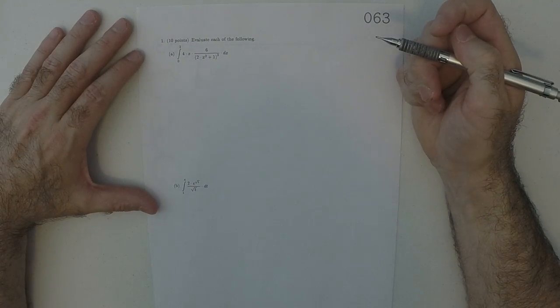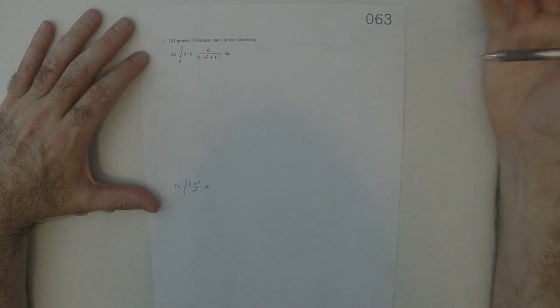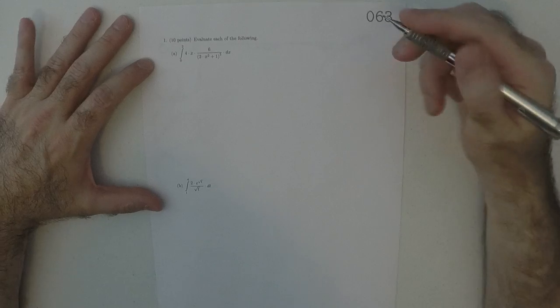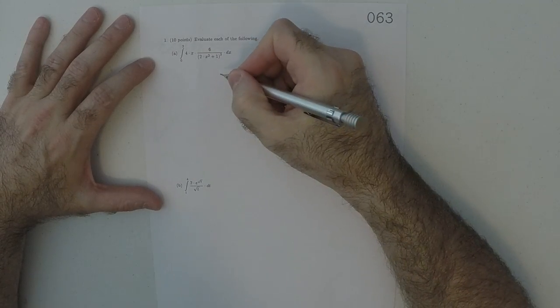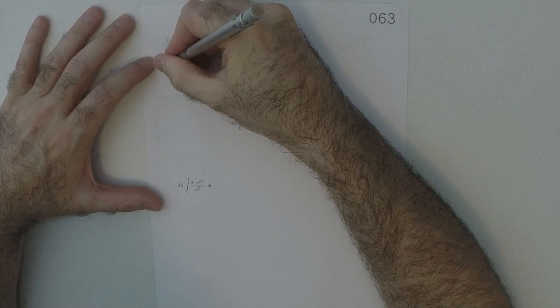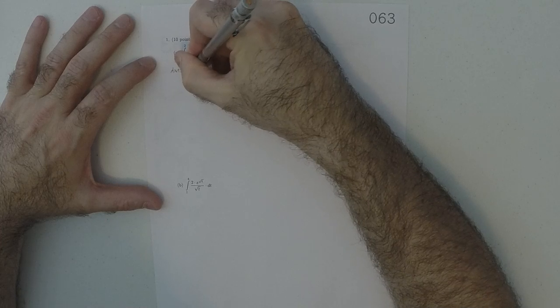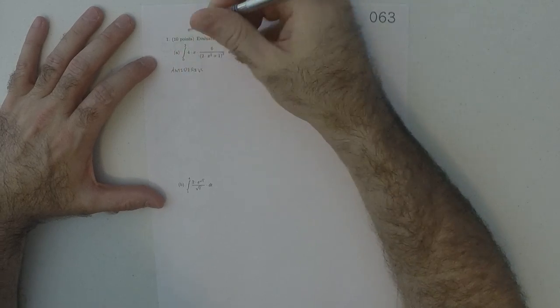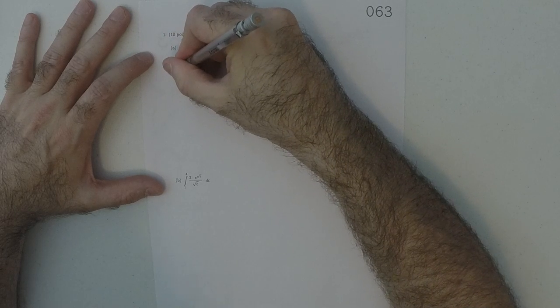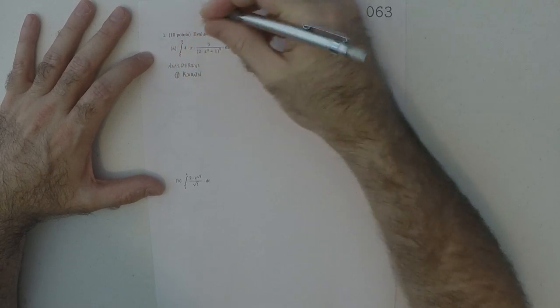This is the solution to Wex 063. Alright, so for this one, it's an integral, so of course we want to use the Fundamental Theorem of Calculus. So we want to find an antiderivative so that we can use the Fundamental Theorem. To find an antiderivative, let's first ask, is this one of the known antiderivatives?